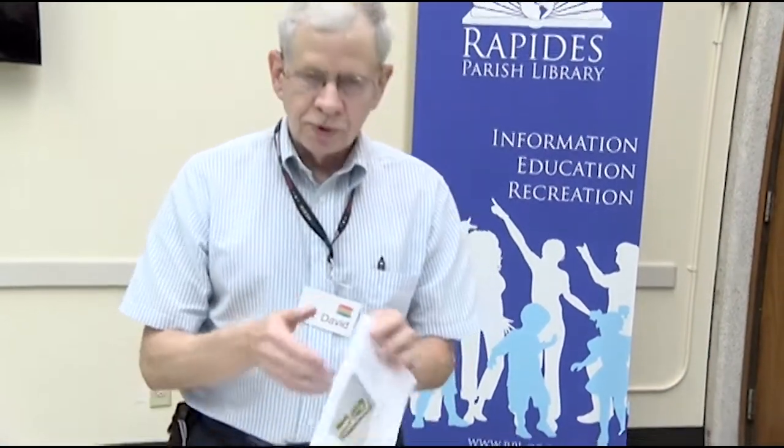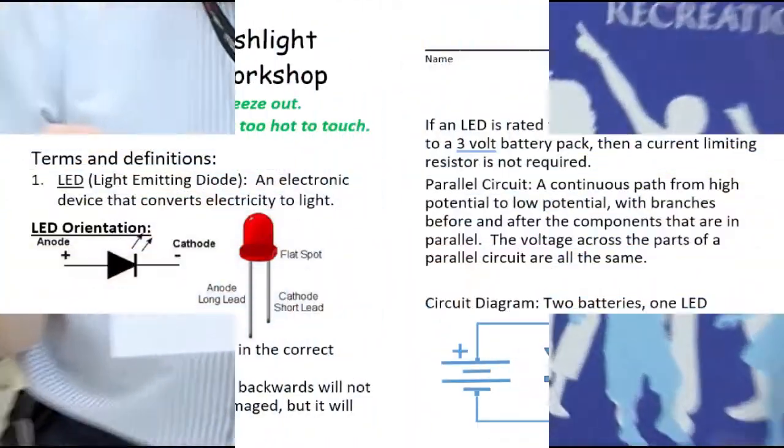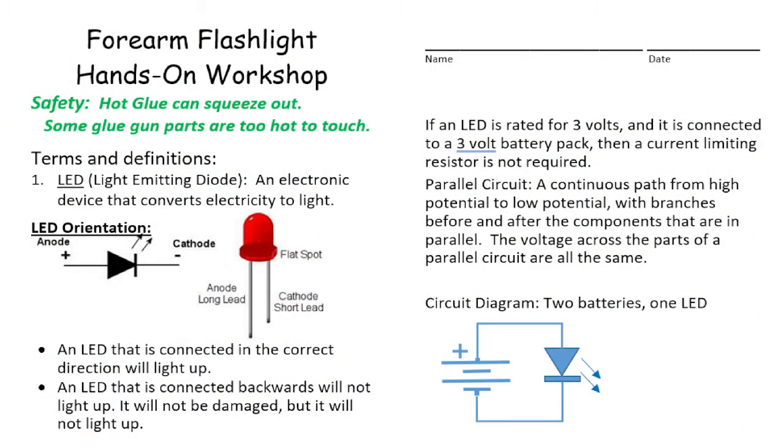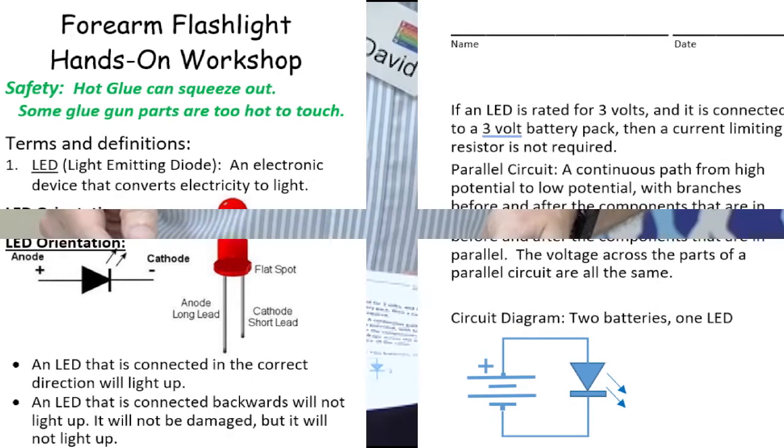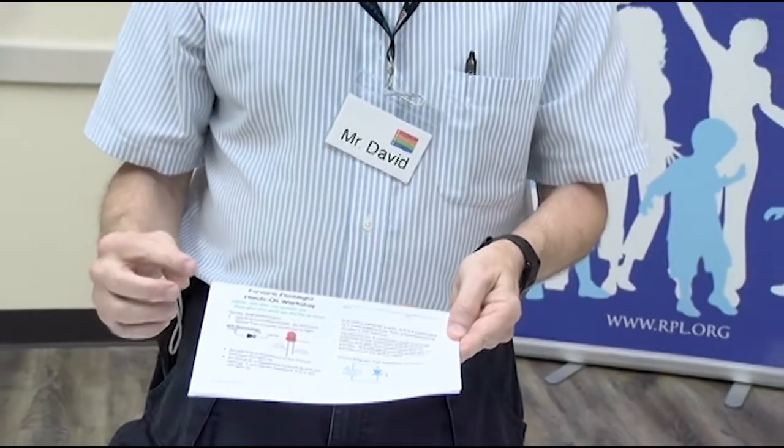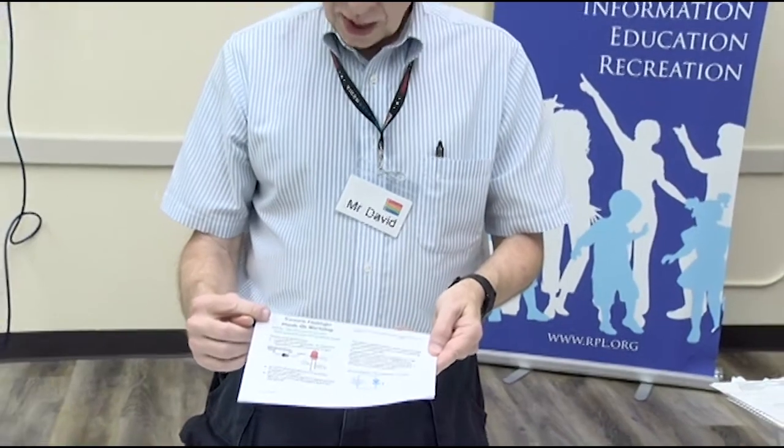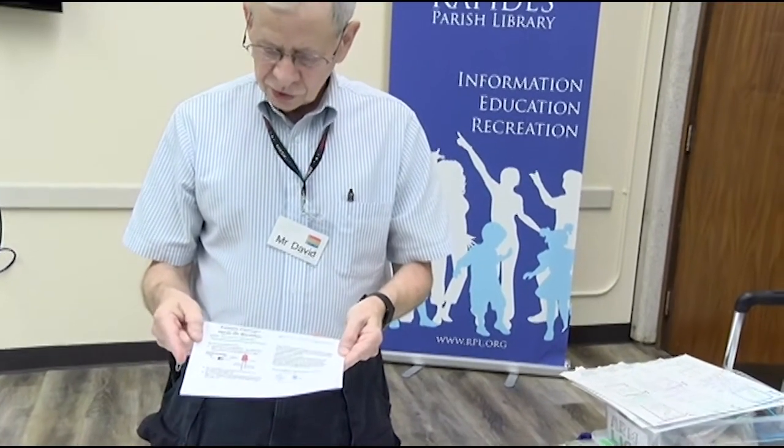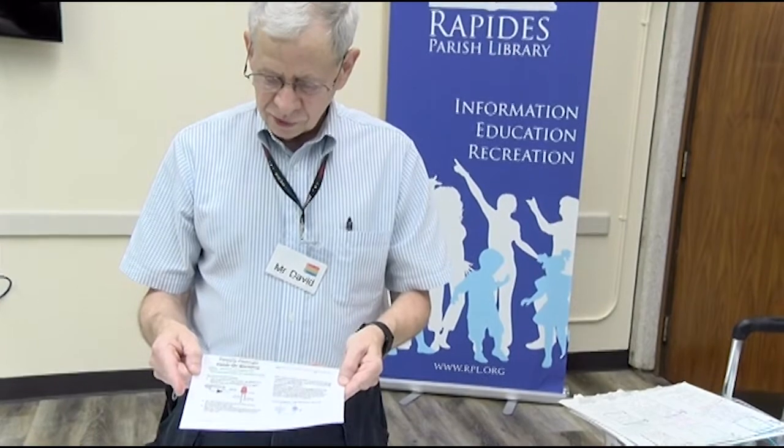Next step we're going to do is ask you to find your take home paper. It should look about like this. And I'd like to ask you to write your name and today's date on the front of the take home paper. It's important to have the date because you may want to look back at this in the future.